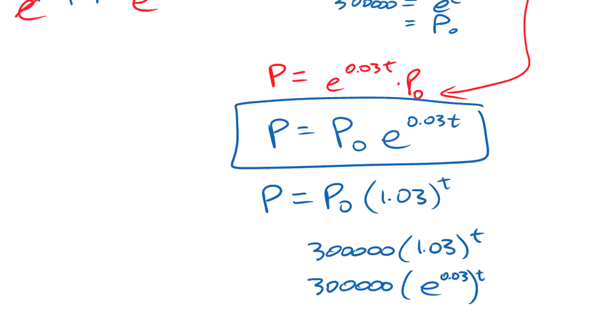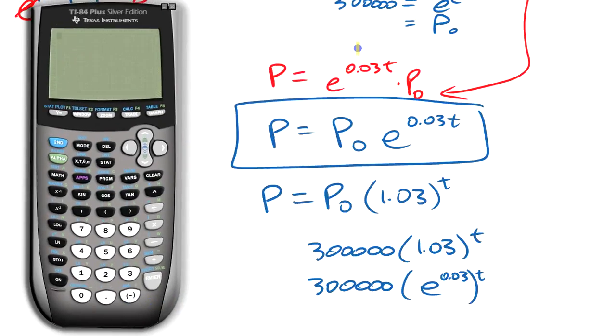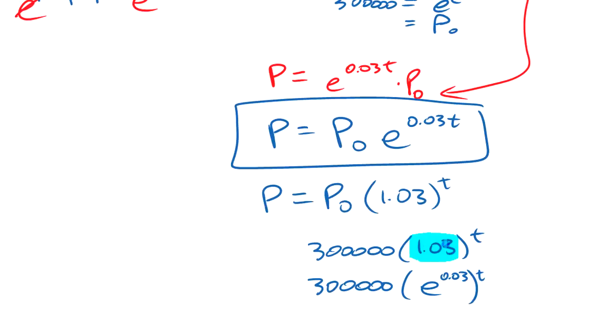These two expressions, if you check your calculator, which we could do right now, if you take your calculator and go e to the power of 0.03, that gives you roughly 1.03. These two expressions, if you see there, these two expressions are very close to each other. This and this are almost the same. The difference in those two things is whether you're assuming that the 3% is a continuous growth rate or not.